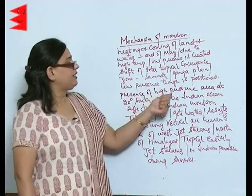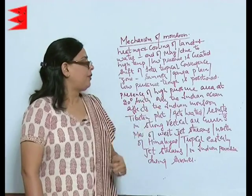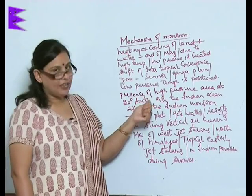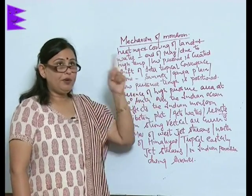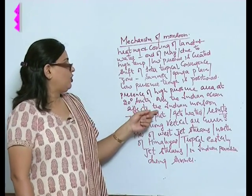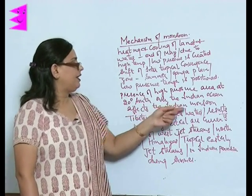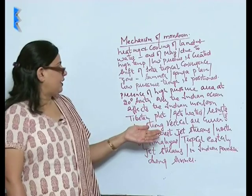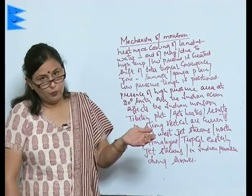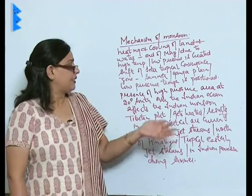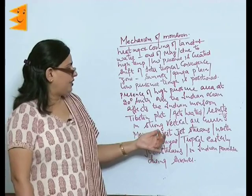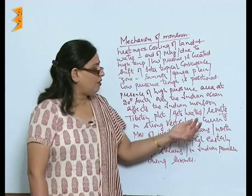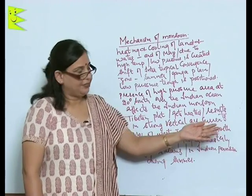Next is the presence of a high pressure area at 20 degrees south over the Indian Ocean, which affects the Indian monsoon. Next is the Tibetan plateau, which gets heated and results in strong vertical air currents.